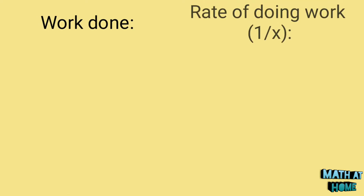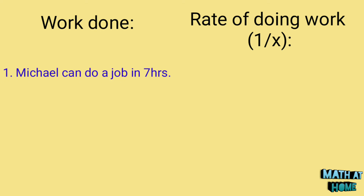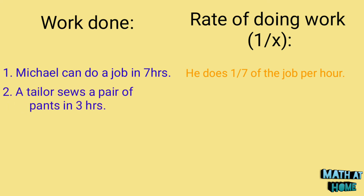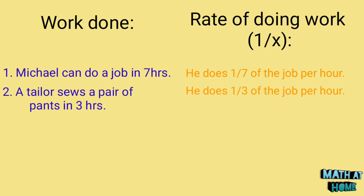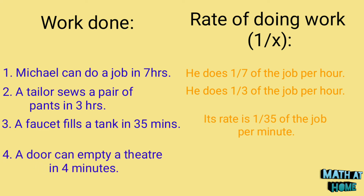Examples of work done and the rate of doing work represented as 1 over x. Number 1: Michael can do a job in 7 hours, so he does 1/7 of the job per hour. Number 2: a tailor sews a pair of pants in 3 hours, then he does 1/3 of the job per hour. Number 3: a faucet fills a tank in 35 minutes, its rate is 1/35 of the job per minute. And number 4: a door can empty a theater in 4 minutes, so its rate is 1/4 of the job per minute.